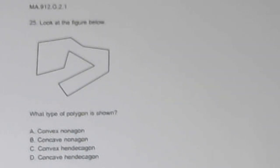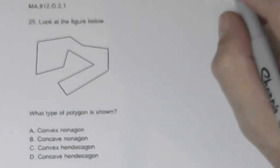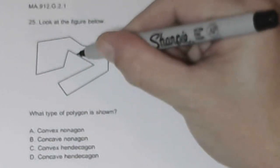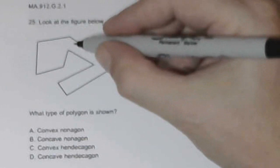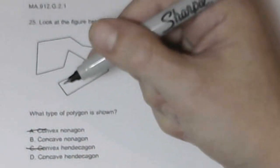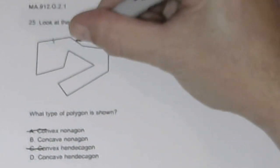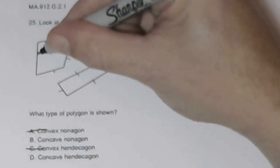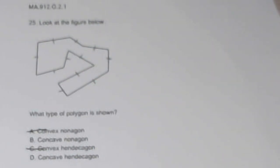Number 25, look at the figure below. What type of polygon is shown? Well, first of all, is it concave or convex? Because it sort of folds in on itself, it's going to be concave. If you want a mnemonic, it caves in on itself, I guess. So that eliminates these two. Now, I'm going to count the sides. That's one, two, three, four, five, six, seven, eight, nine, ten, eleven. Non is nine, which means that it has to be choice D, which is a hendekagon.